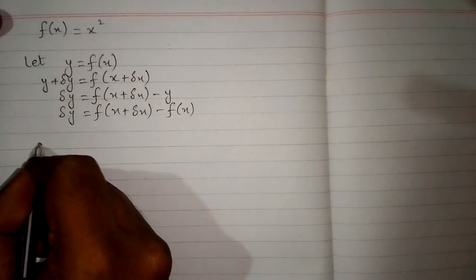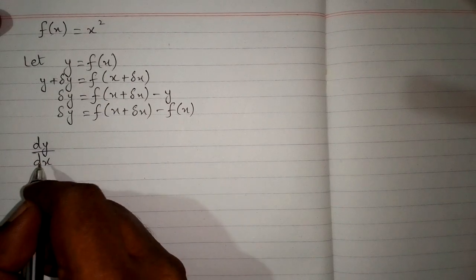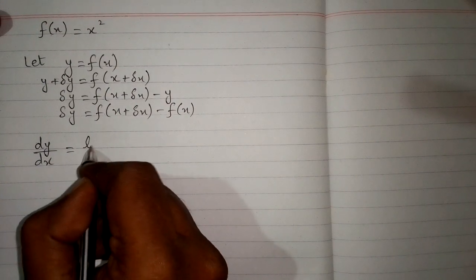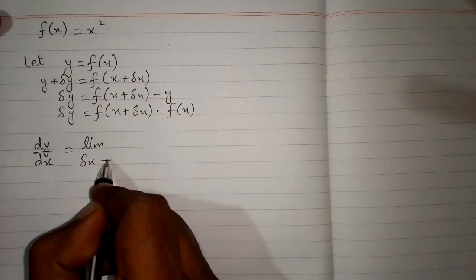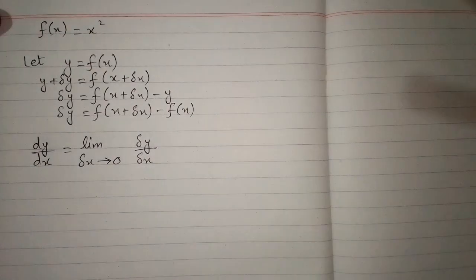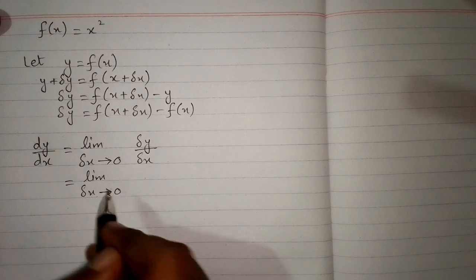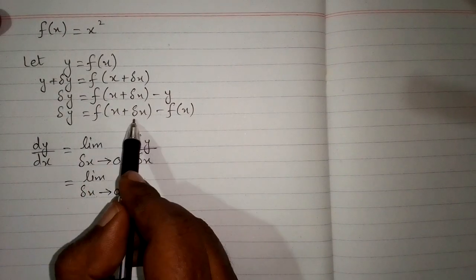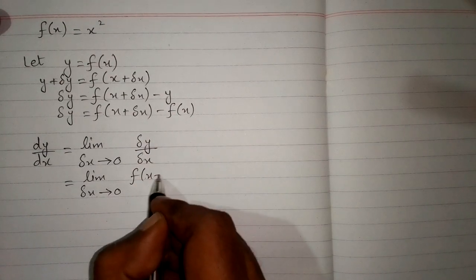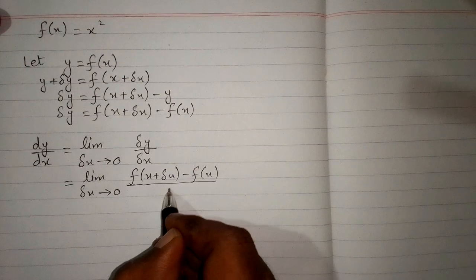Now we will differentiate this function by first principle. The definition of first principle is: the derivative dy by dx is equal to limit delta x tends to 0 of delta y upon delta x. Now we can put f of x plus delta x in place of delta y, so we have f of x plus delta x minus f of x, all upon delta x.